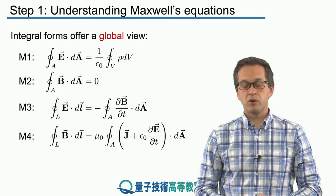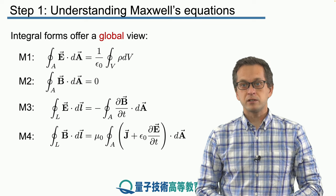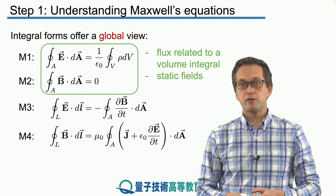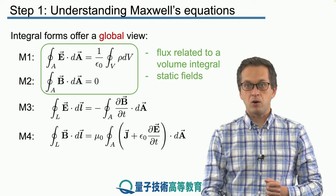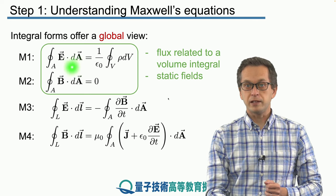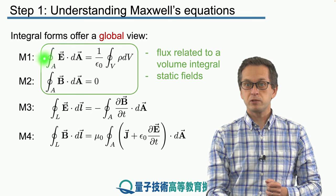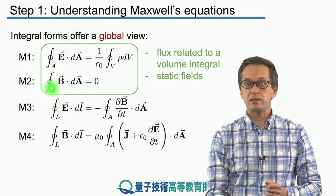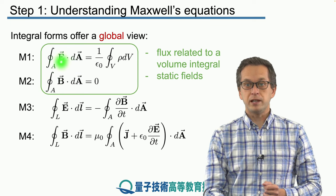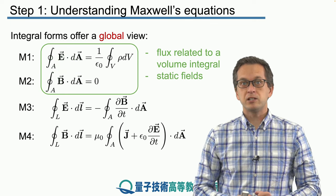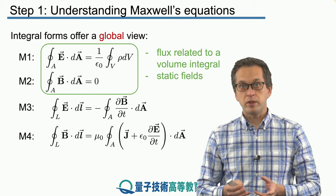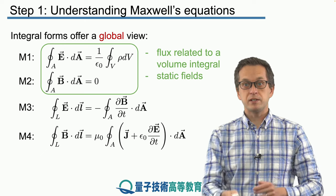So here are the four Maxwell's equations. The first two equations tell us about static fields, and they look at fluxes through surfaces. Always remember that we are computing the flux of an electric field through some closed surface A, and also the flux of the magnetic field through a closed surface A. In the case of the electric field, this flux is actually dependent on the sources of electric fields enclosed within the volume whose surface is A.